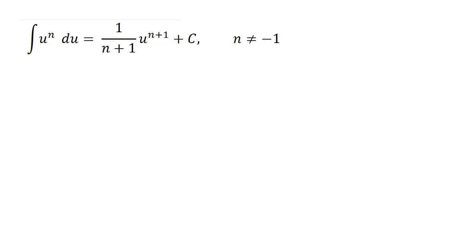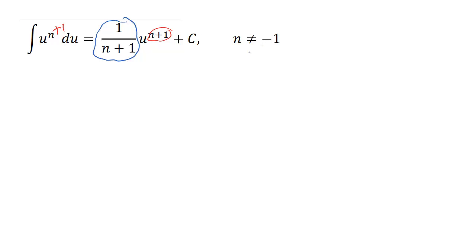In this video we're going to do some integrals using u-substitution. The formula is the integral of u to the n du — we add 1 to the exponent, then multiply by the reciprocal of that new exponent, plus our constant term c. When using this power rule, n cannot be equal to negative 1.